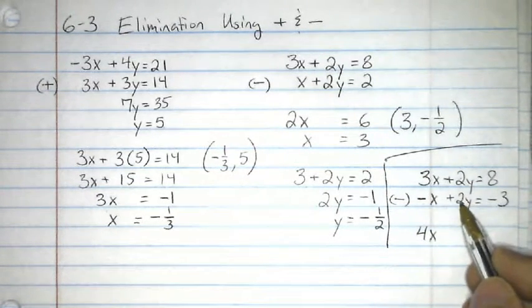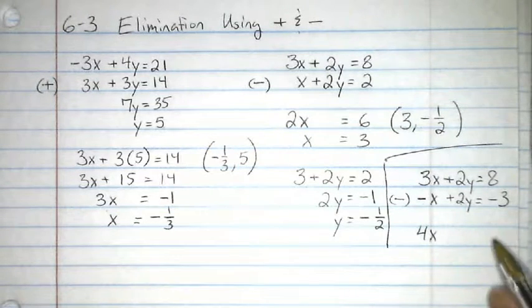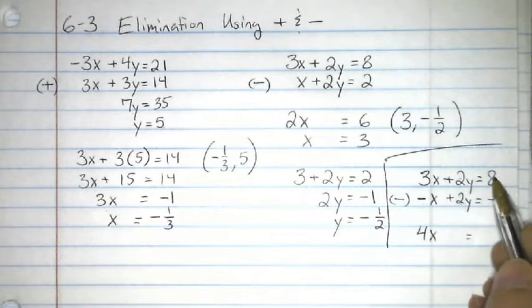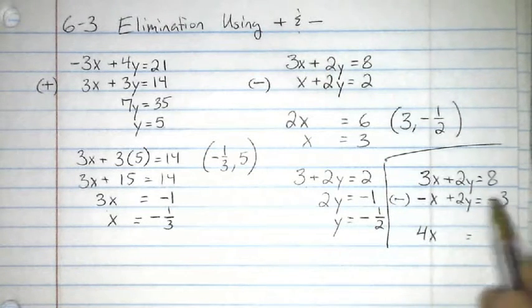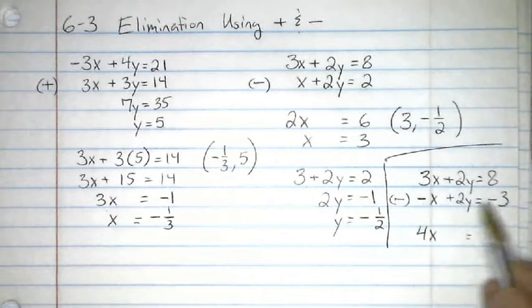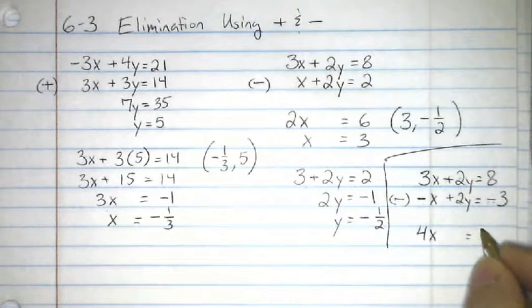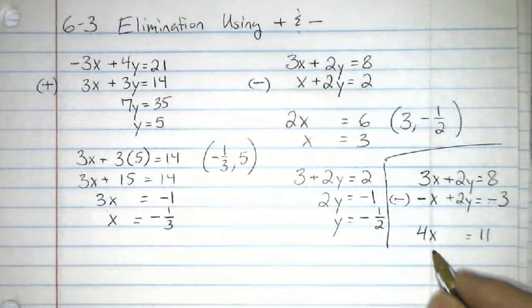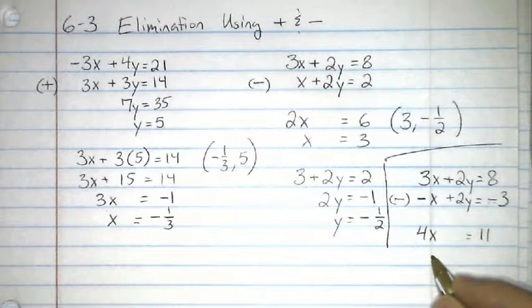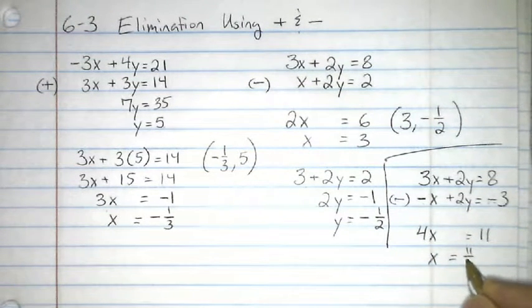2y minus 2y, that would be no y's, cancels out. Here, 8 minus negative 3, minus a negative is the same thing as plus. So, this would be 8 plus 3, which would be 11. And then to finish it up, we would divide both sides by 4, and we would get x equals 11 fourths.